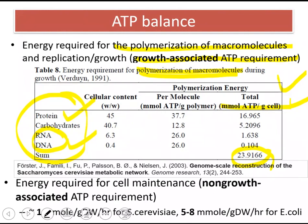But energy is also required for the maintenance of the cell for survival. This is not energy required for growth or for anabolic or catabolic reactions — this is the energy for the maintenance of the cell other than growth processes. This energy is referred to as non-growth-associated ATP maintenance. Compared to growth-associated ATP maintenance, this is much lower. For Saccharomyces cerevisiae, for example, the value used in literature is 1. For E. coli, it's a little bit higher, between 5 and 8.